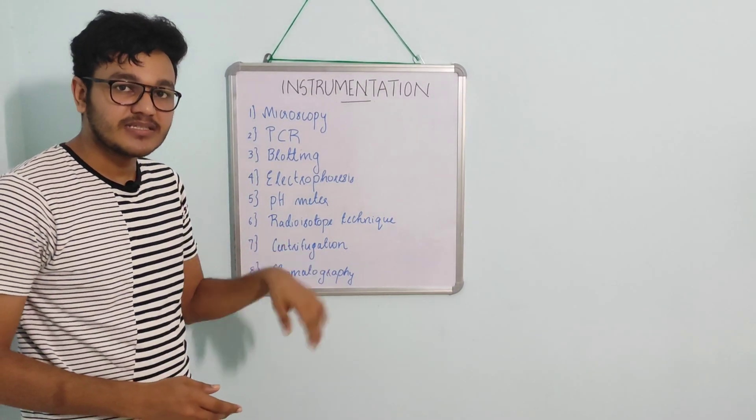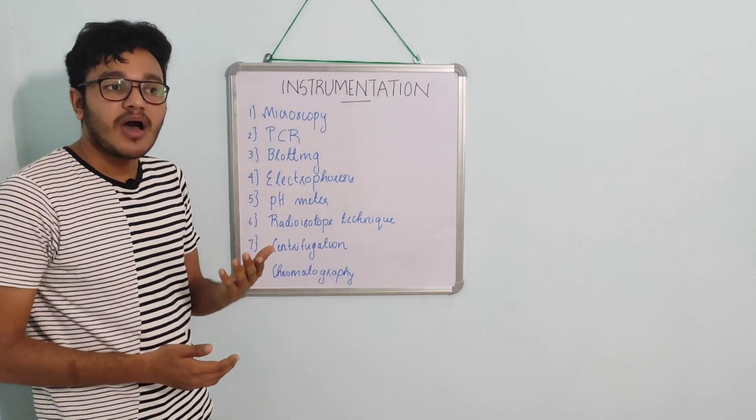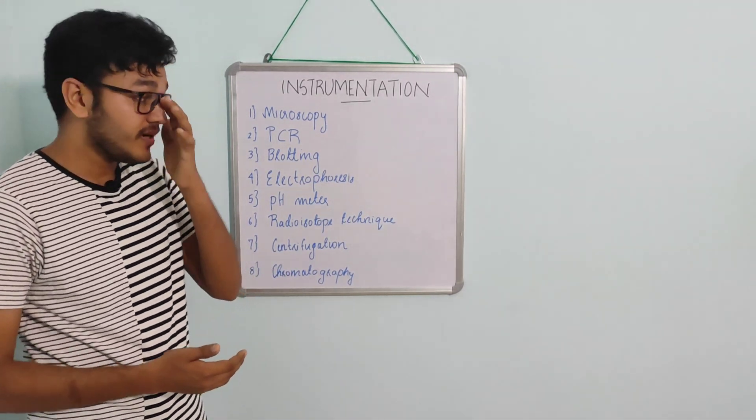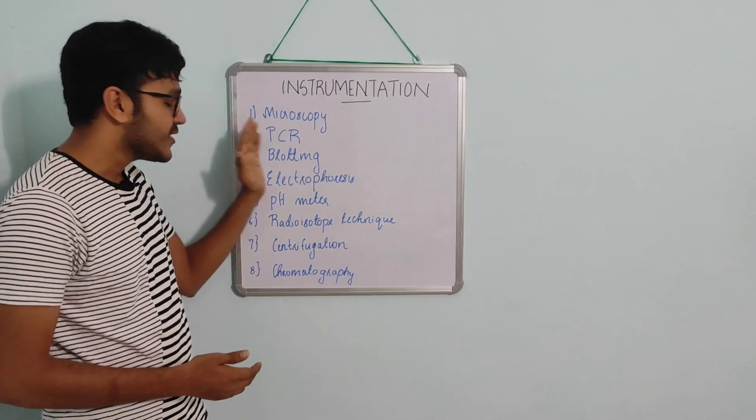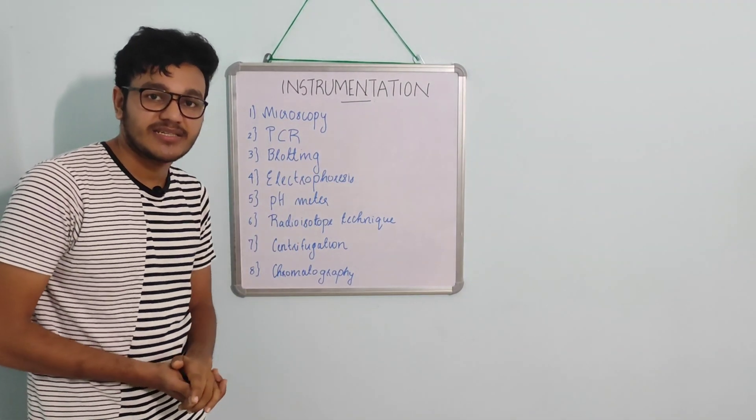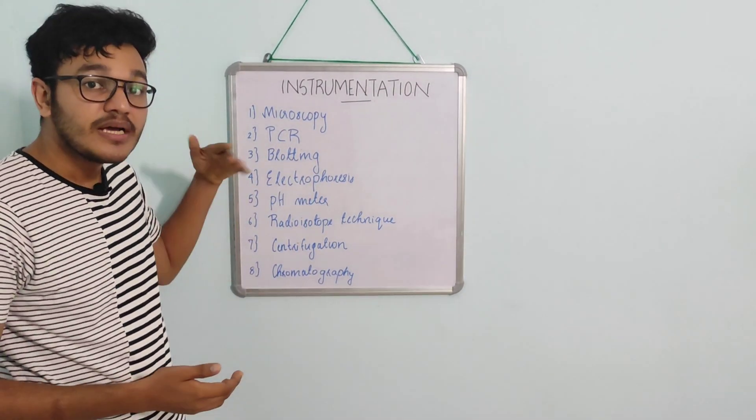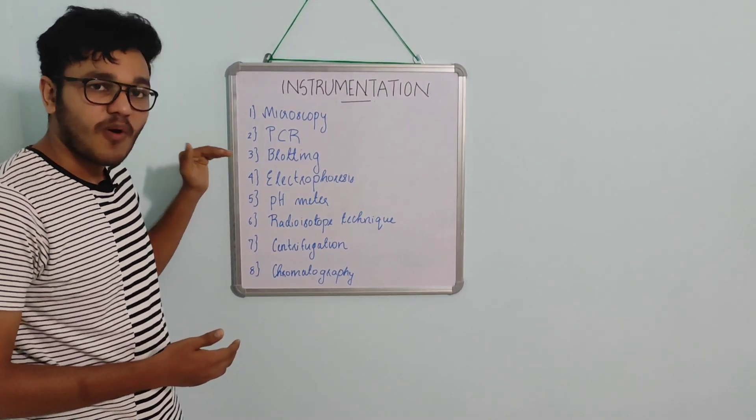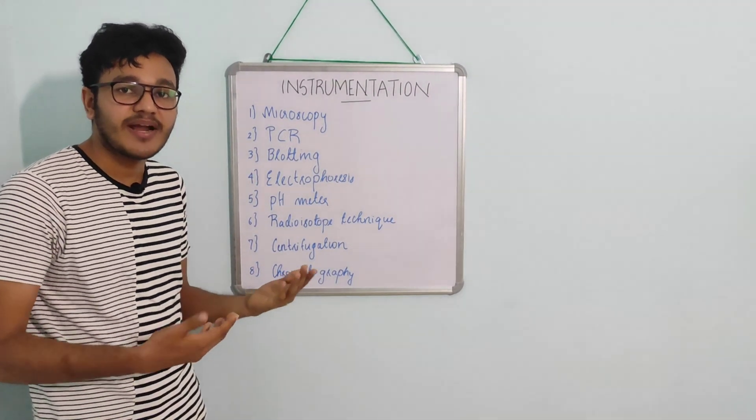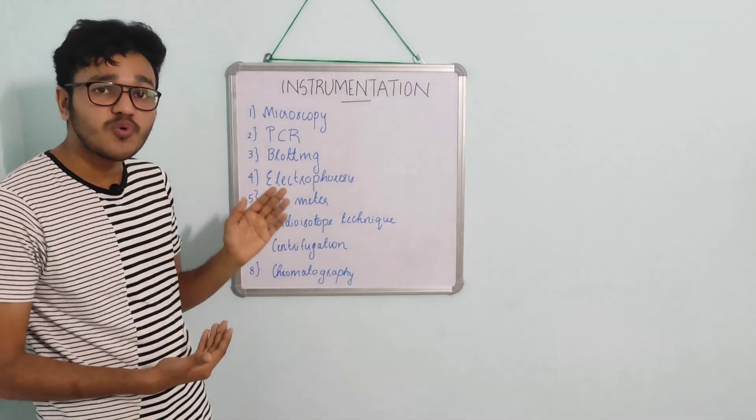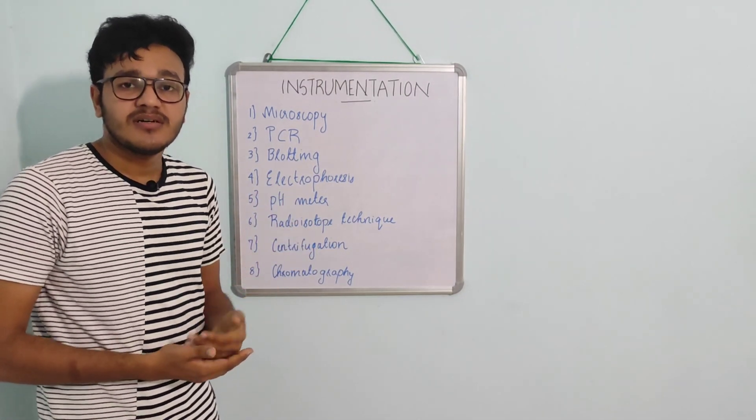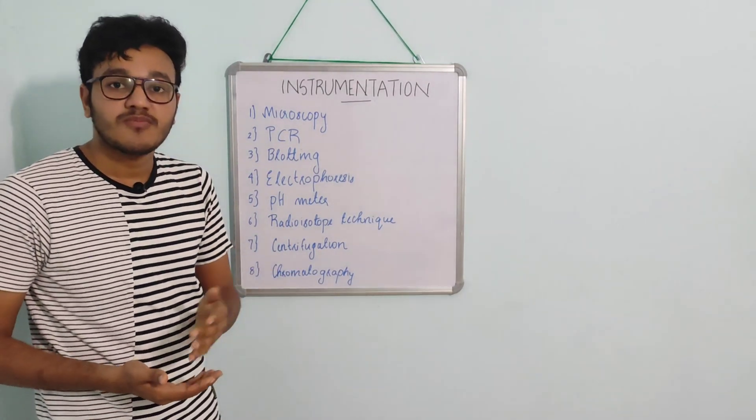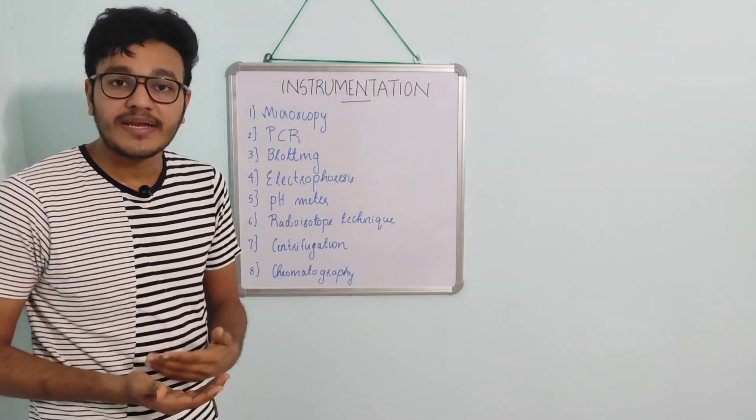The first one is microscopy, the study of microscopes, the different types, its history, its uses, and how it was developed. Next is PCR, polymerase chain reaction developed by Kary Mullis. We have to discuss the various steps, the procedure, and the principle. The third one is blotting, the transfer of DNA onto nitrocellulose paper. We have to deal with western blotting and northern blotting, which are related to protein and RNA.